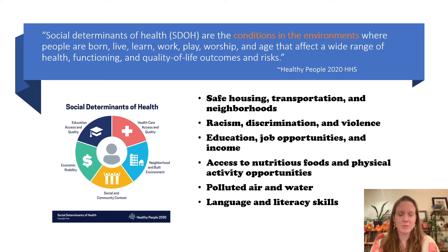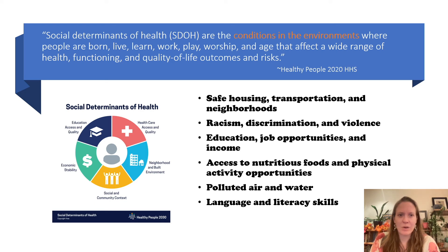So what is the official definition of a social determinant of health? There's no completely standardized definition, but one I like is: the social determinants of health are the conditions and environments where people are born, live, learn, work, play, worship, and age that affect a wide range of health functioning and quality of life outcomes and risks — from the US Department of Health and Human Services. They've also broken it down into five categories. More specifically, topics include housing, transportation, neighborhoods, racism, discrimination and violence, education, job opportunities and income, access to nutritious foods and physical activity opportunities, polluted air and water, and language and literacy skills.